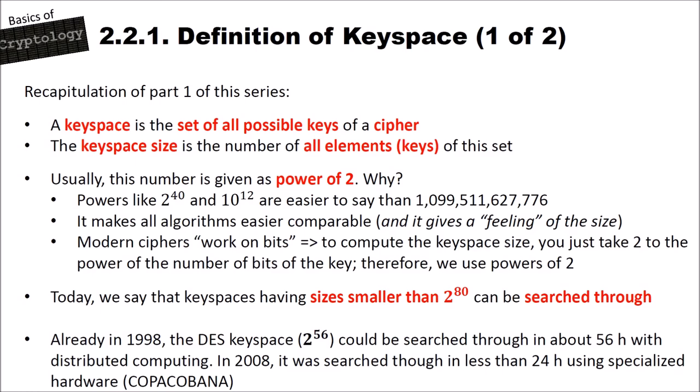This slide is a recapitulation of part 1 of this series. A keyspace or cryptographic keyspace is the set of all possible keys of a cipher, and the keyspace size is the number of all elements — keys — in this set. Cryptographers and cryptanalysts usually give this number as a power of 2. Powers like 2 to the power of 40 or 2 to the power of 12 are easier to express than the full decimal number 1,099,511,627,776.